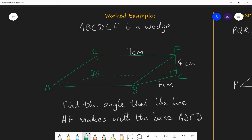The question though is find the angle that the line AF makes with the base ABCD. I've chosen this specific question rather than the multitude of different questions that I could have chosen in 3D trigonometry, because I find that students often make a mistake when they're asked to find the angle between a line and a base.